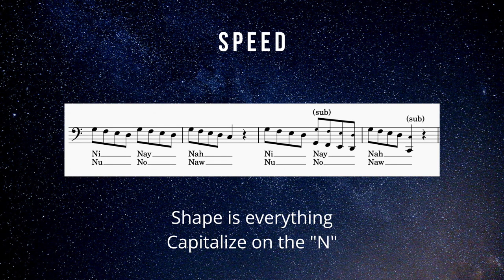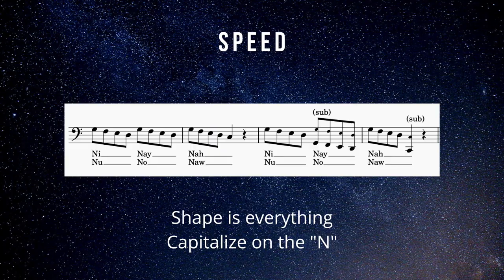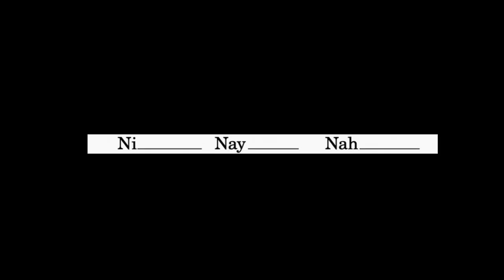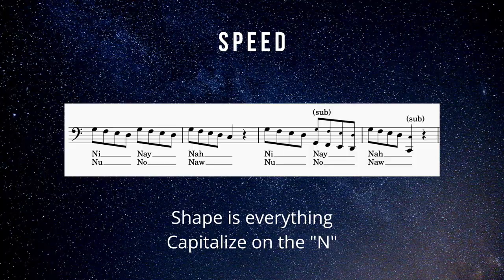I recommend starting at a slower tempo or sometimes maybe even a faster tempo to work on that transition, that speed. You can use Nu, No, Na to work on darker vowels. I like using Ni, Ne, Na, the higher, brighter vowels to really zone in on those high subharmonics. Move it up or down a half-step as needed.